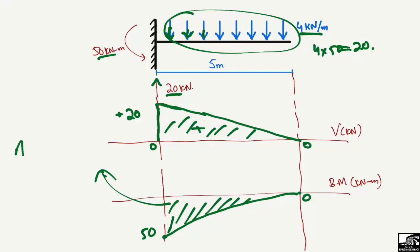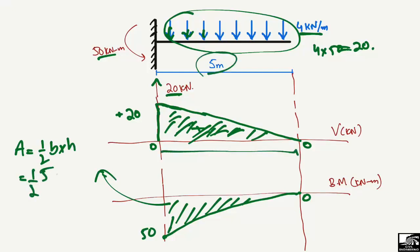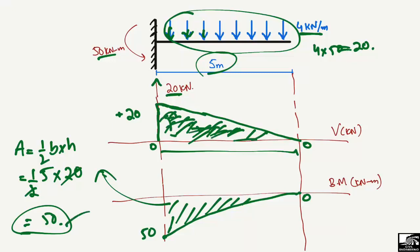The moment can be found from the area of the shear force diagram. The shear force diagram is a triangle, so the area equals half base times height: half times 5 meters times 20 kilonewton equals 50 kilonewton·meter. This confirms our earlier result — if you know the area of the shear force diagram, that gives the bending moment value. I hope you understand how to find support reactions, draw the shear force diagram, and find bending moment values. Don't forget to subscribe to our channel for daily civil engineering videos. Thank you for watching.